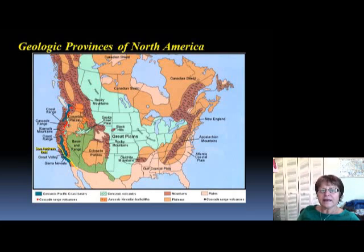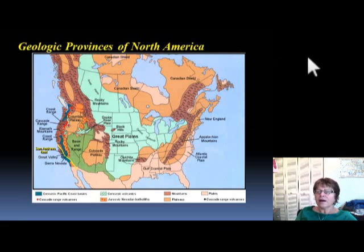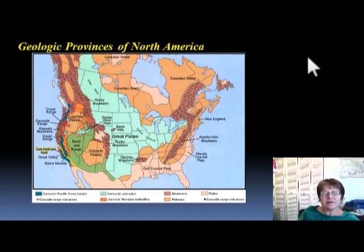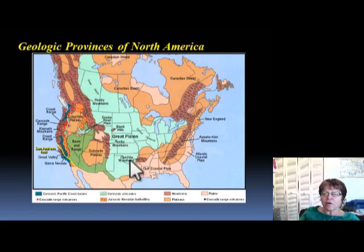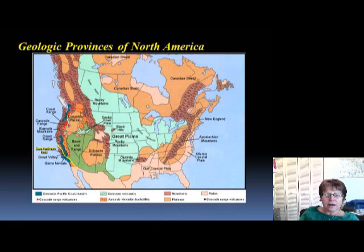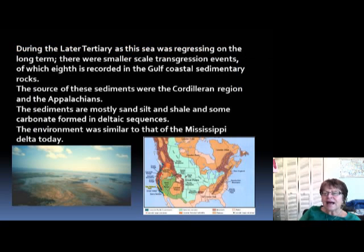Let's continue the Cenozoic chapter. This slide shows the geologic provinces of North America. During the Cenozoic, we're going through regions because the sea level was never high enough to cover the whole continent, so we're going to focus on the eastern part of the country, starting with the Gulf of Mexico area.